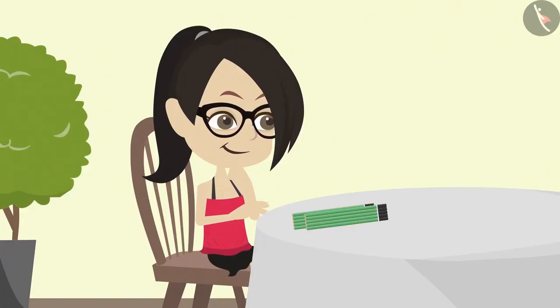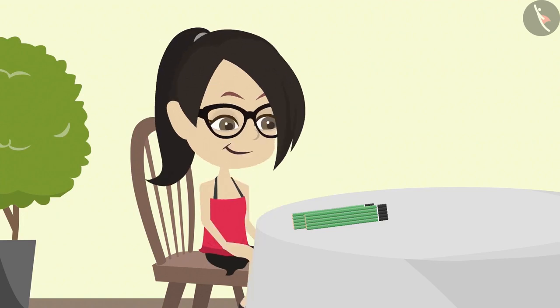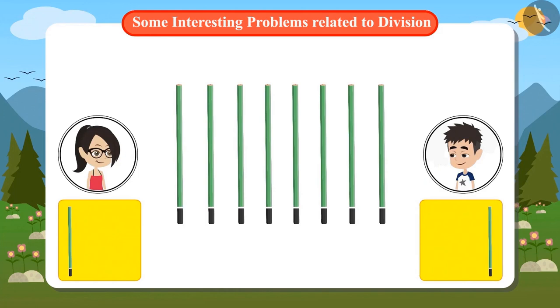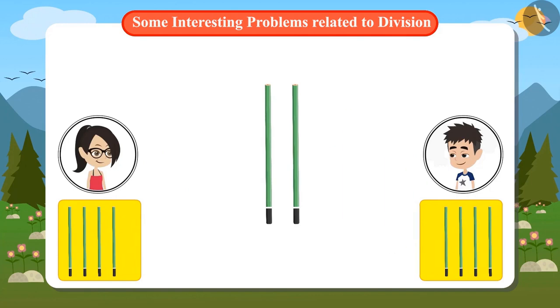Vandana has got an idea to divide the pencils equally into two parts. Let's see what she does. First, I keep one pencil for me then one for my brother. Again one for me and then one for my brother. In this way, I keep a pencil for me and a pencil for brother until all the pencils are divided.